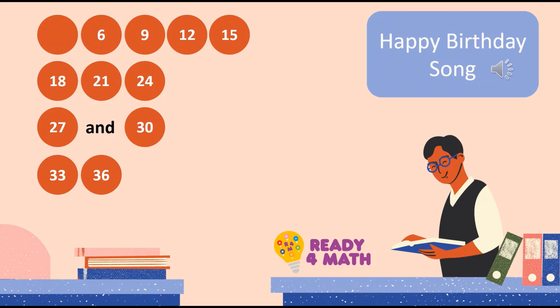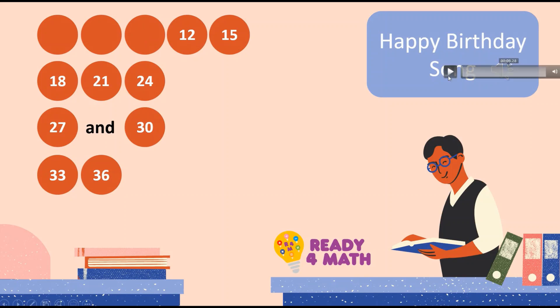Let's now remove another number. Ready? Sing: 3, 6, 9, 12, 15, 18, 21, 24, 27, and 30, 33, 36. Let's sing once again: 3, 6, 9, 12, 15, 18, 21, 24, 27, and 30, 33, 36. Good job.